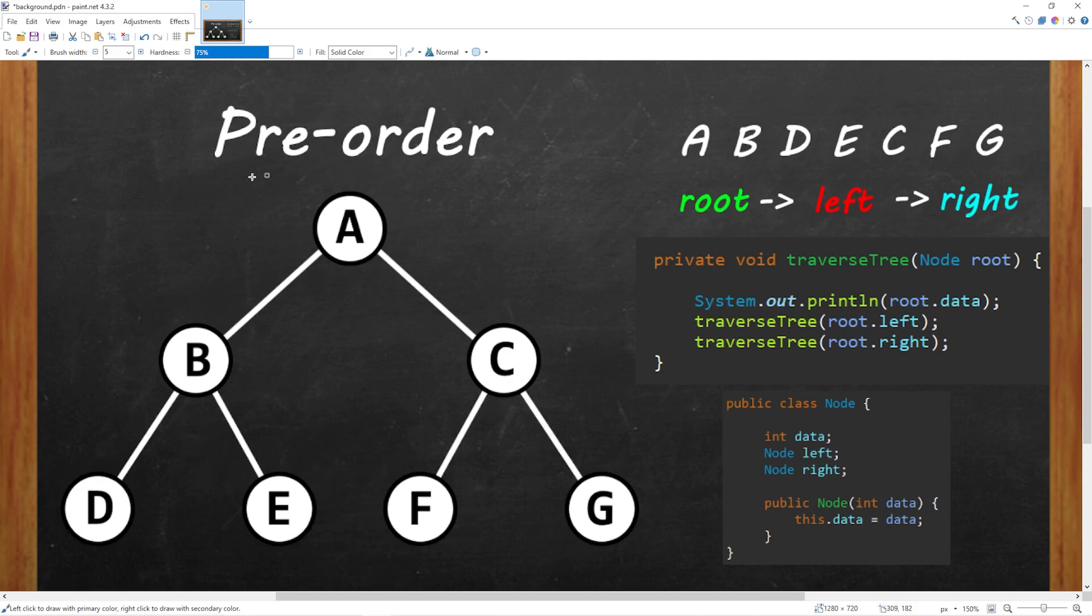And lastly, we have pre-order traversal. Pre-order traversal is used to create a copy of a tree. We visit any root nodes first, then left, then right.